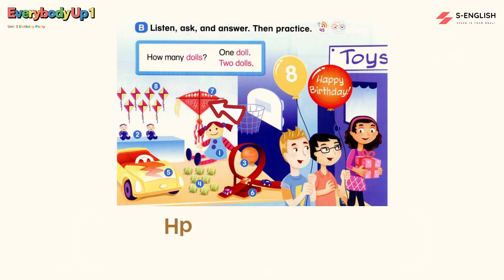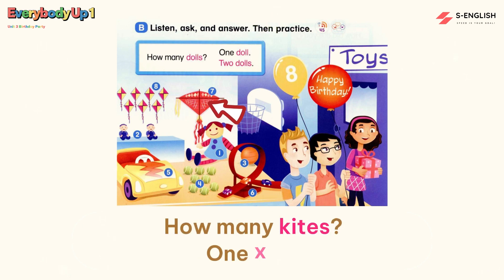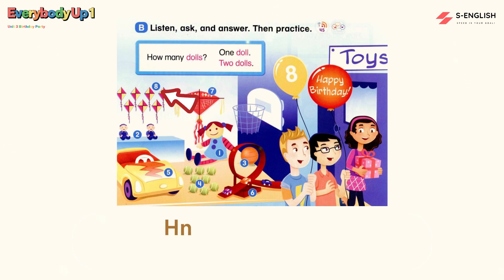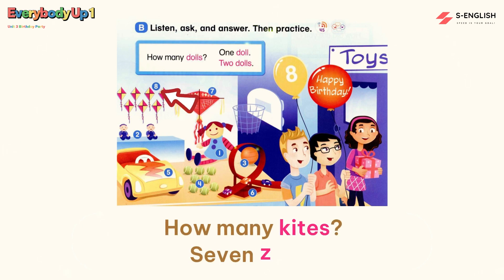How many kites? One kite. How many kites? Seven kites.